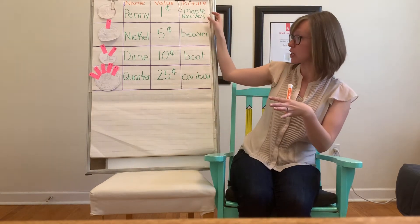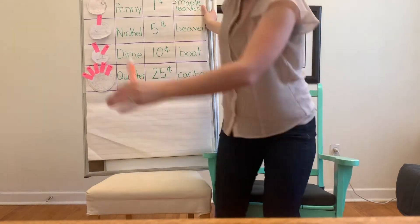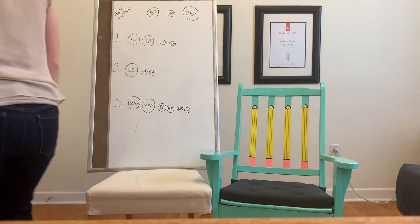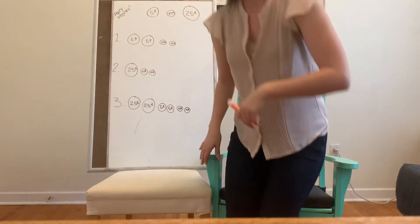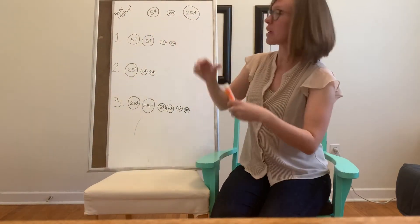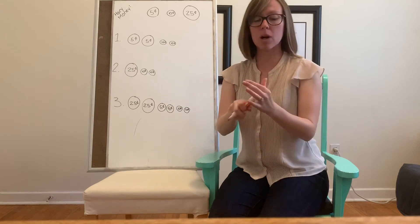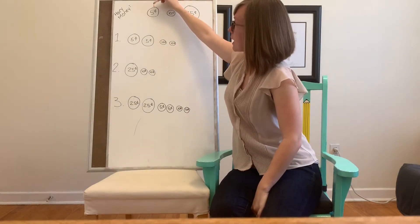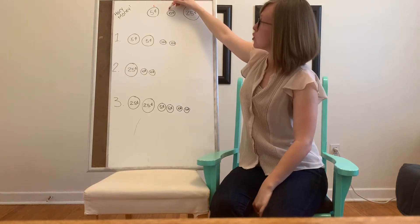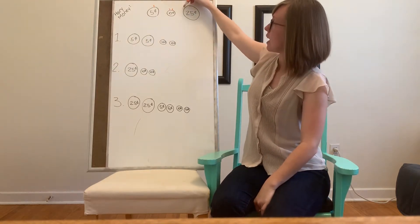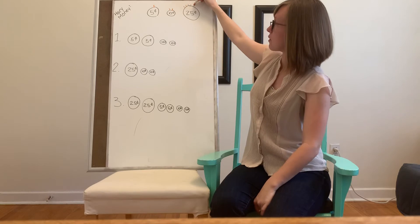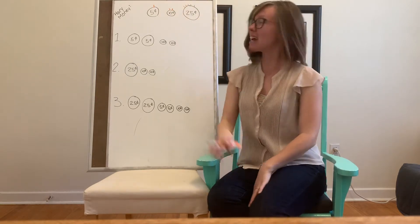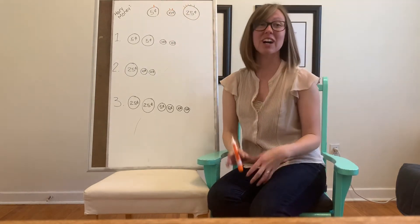I'm going to move our anchor chart out of the way. On top of our work today I have the coins here so we can remember how to use our hairy money strategy: one hair for five cents, two for ten cents, and one, two, three, four, five hairs for twenty-five cents. That way if I forget, I can look up here for a little help.